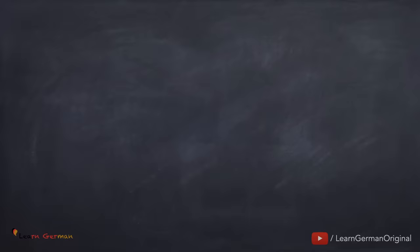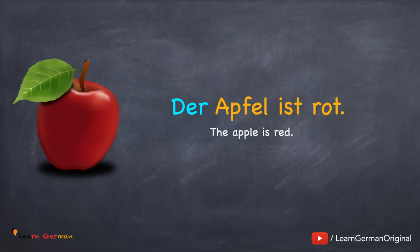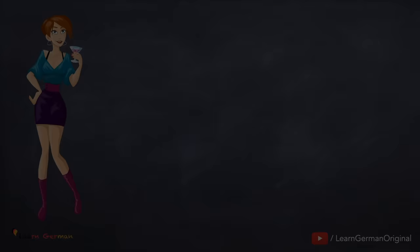In this lesson, we'll be doing bestimmte Artikel im Nominativ. Let's look at some sentences. Der Mann ist glücklich. In this sentence, Mann is the Nominativ Subjekt and a noun. The article here is der. Similarly, the next sentence: Der Apfel ist rot. Apfel ist das Nominativ Subjekt, which is a noun, and the article is der.